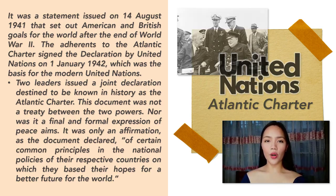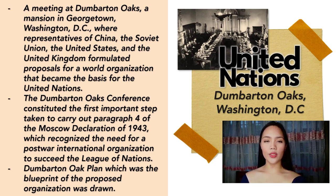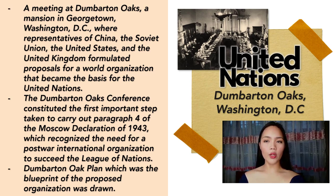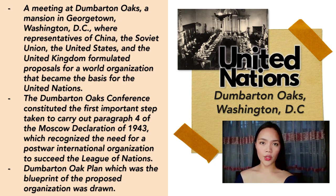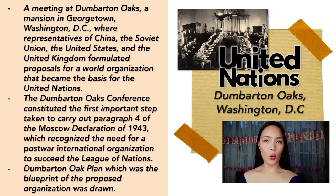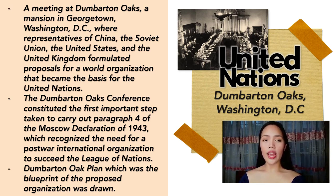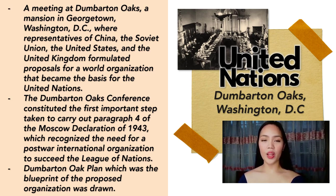On New Year's Day 1942, at the Arcadia Conference in Washington, D.C., 26 different countries from around the world agreed to sign the Declaration by the United Nations. The document pledged that the 26 countries, led by the Big Four — the United States, United Kingdom, Soviet Union, and China — would join forces to defeat totalitarianism, specifically Hitlerism. By the end of World War II, 21 more countries had agreed to the declaration, and even former friends of the Axis powers wished to sign it, though they were not allowed to.